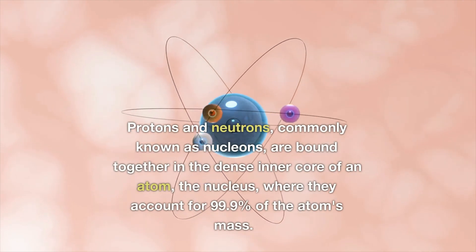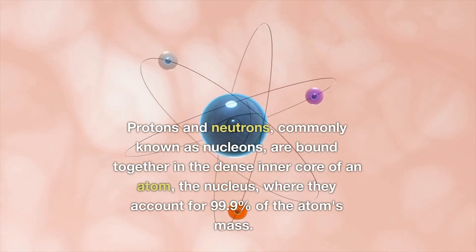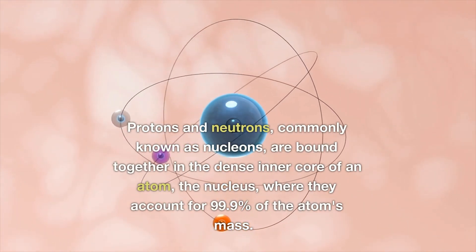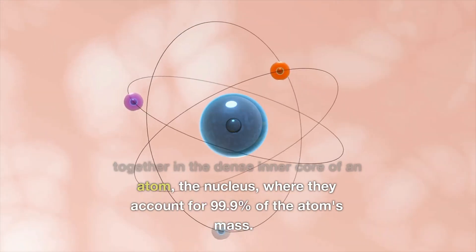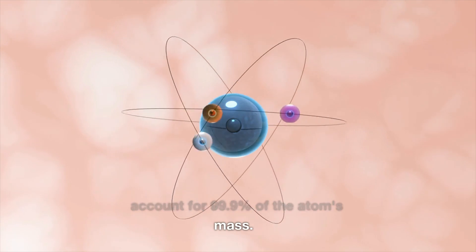Protons and neutrons, commonly known as nucleons, are bound together in the dense inner core of an atom, the nucleus, where they account for 99.9% of the atom's mass.